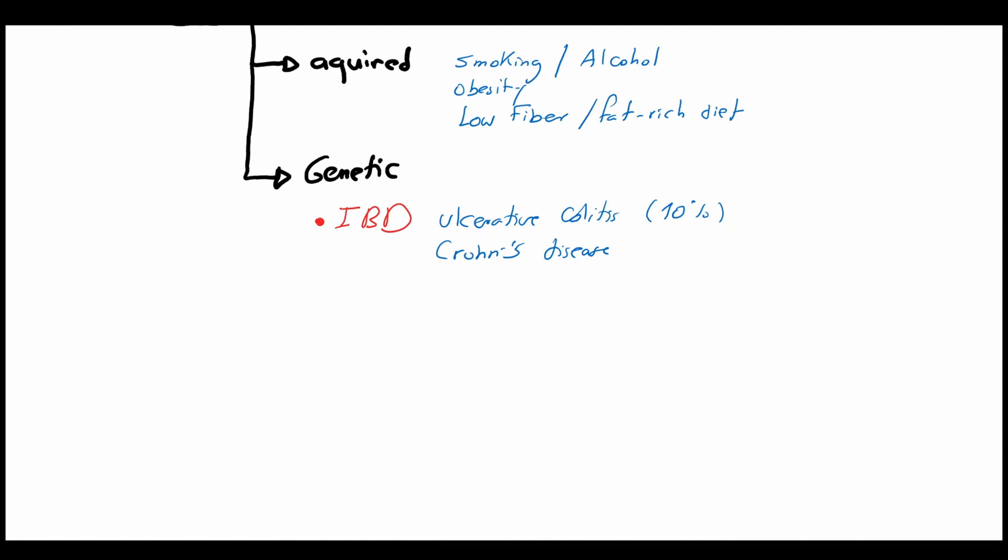Another pathway of formation of colorectal carcinoma which can be considered the most common pathway is the adenoma-carcinoma sequence, which means formation of a malignant tumor on top of a pre-existing benign tumor which is a colorectal polyp. Here we must differentiate between three types of colorectal polyps: adenomatous polyp, adenovillous polyp, and villous polyp which is the most common precancerous lesion.